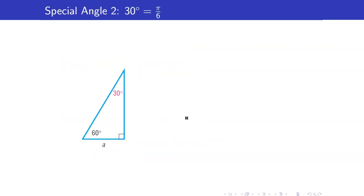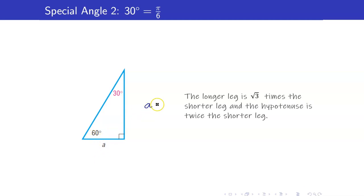Let us now consider our next special angle, 30 degrees. Here is a 30-60-90 triangle. Recall that if you know the length of the side opposite your 30-degree angle, the longer leg opposite the 60-degree angle is equal to square root of 3 times the shorter leg. And the hypotenuse is equal to twice the length of the shorter side, so this is 2a.